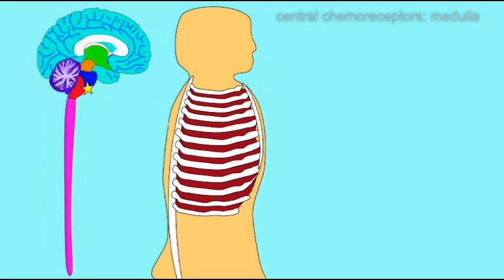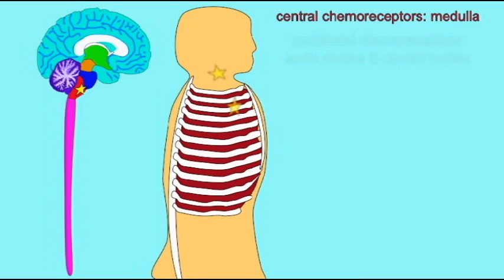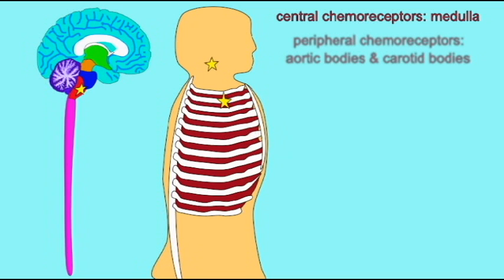The respiratory centers of the medulla and pons receive input from receptors which evaluate the need for respiration. There are receptors in the medulla itself which measure the amount of acid and carbon dioxide in cerebrospinal fluid.